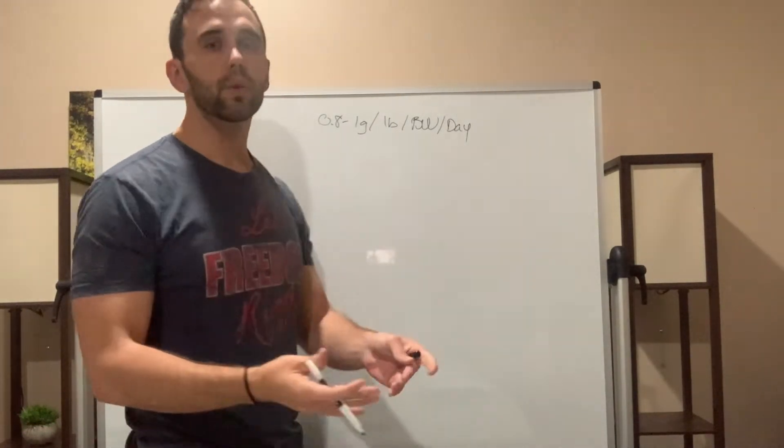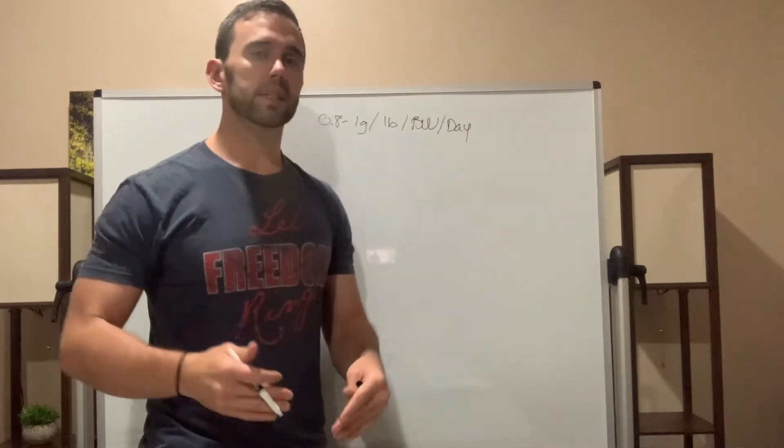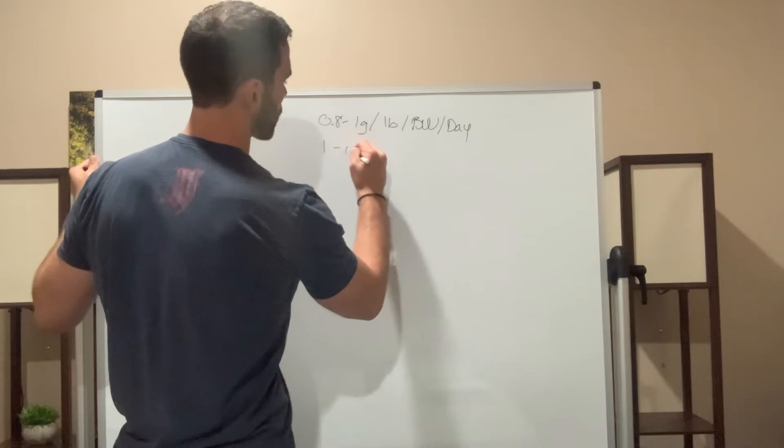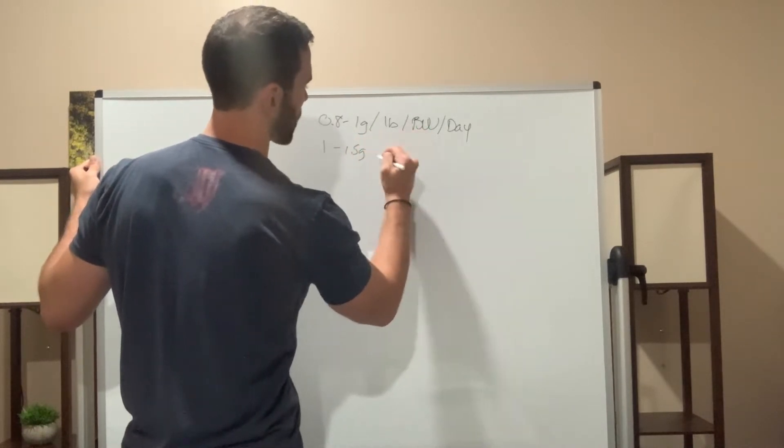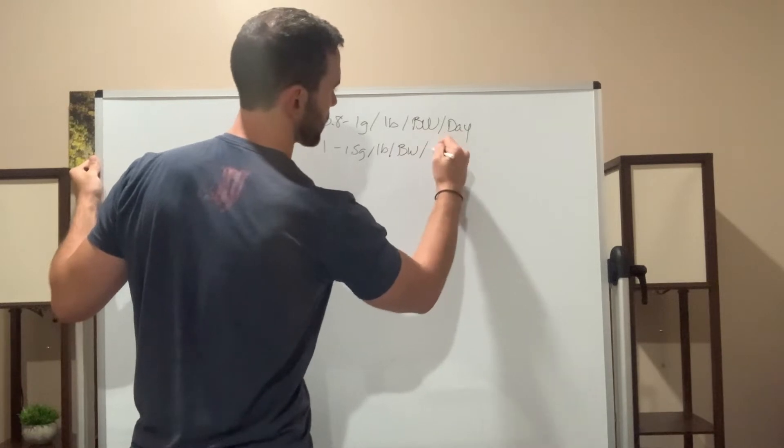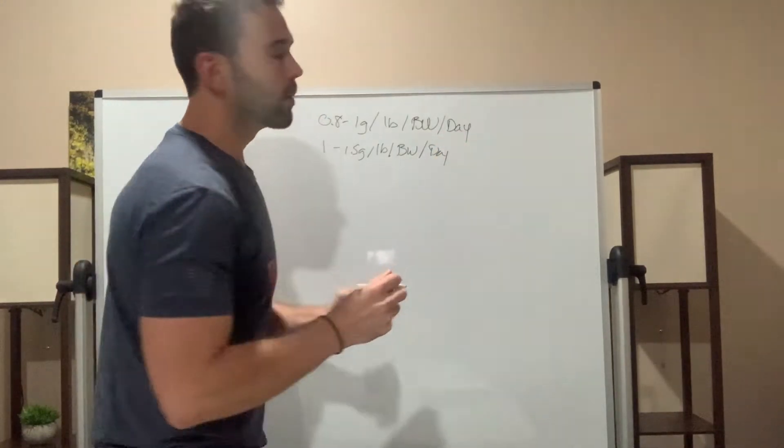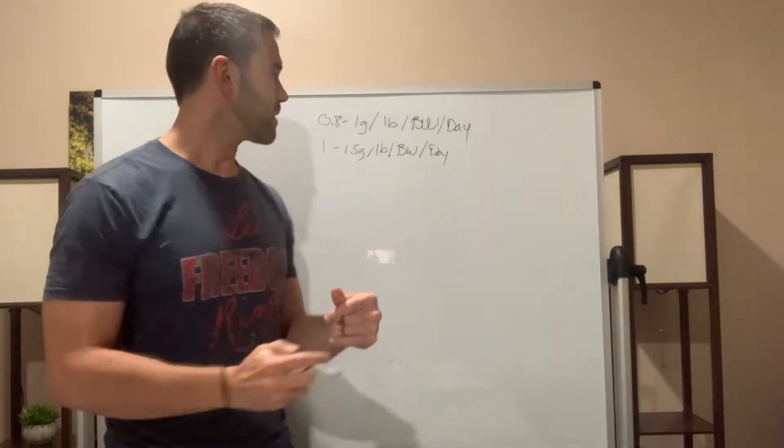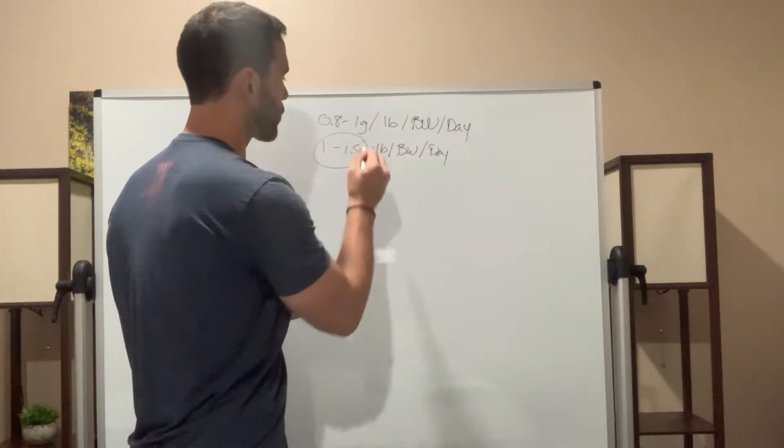Now, if you want to improve your muscle mass, and if you want to lose weight, I would say that you need to bump this up to 1 to 1.5 grams per pound per body weight per day. If you're wanting to add on muscle, whether it's 5 to 10 pounds, then this is probably where you're going to be.